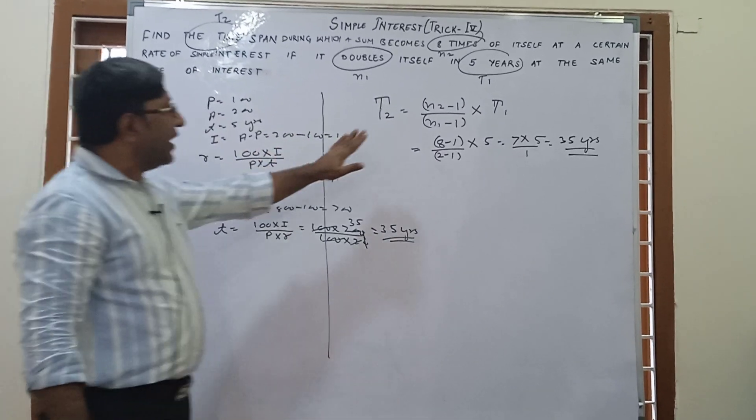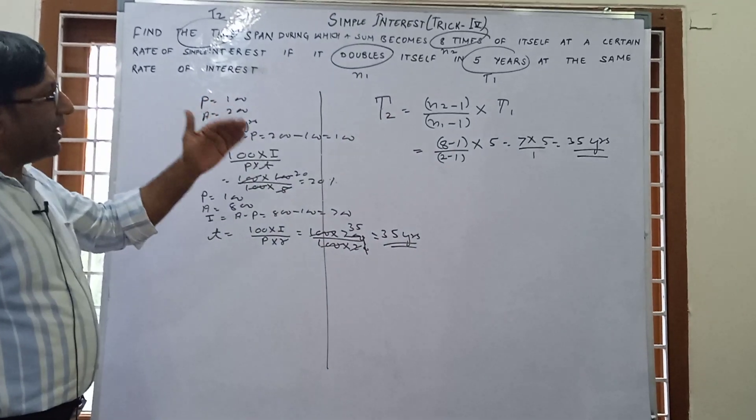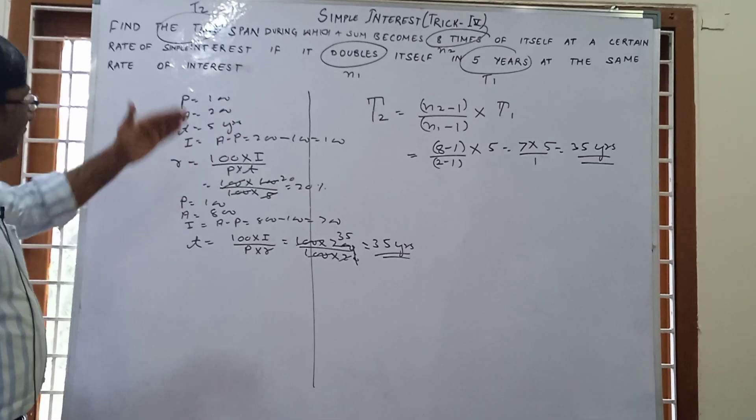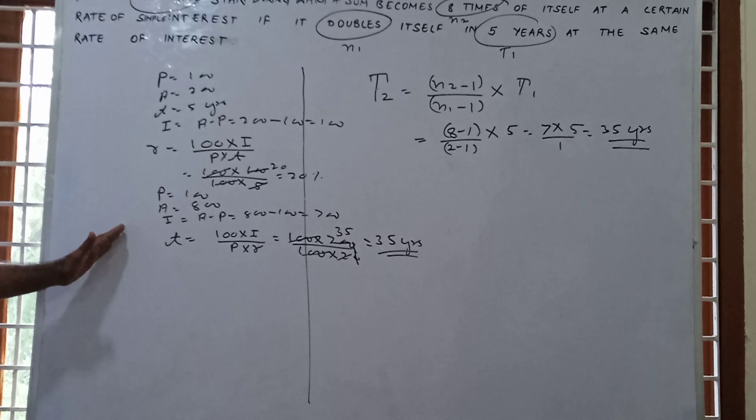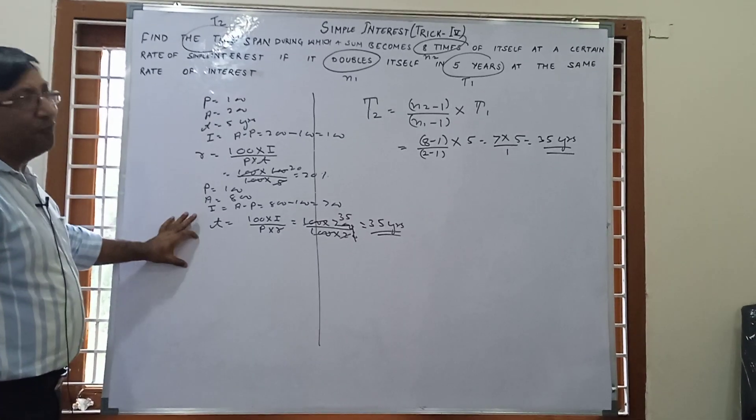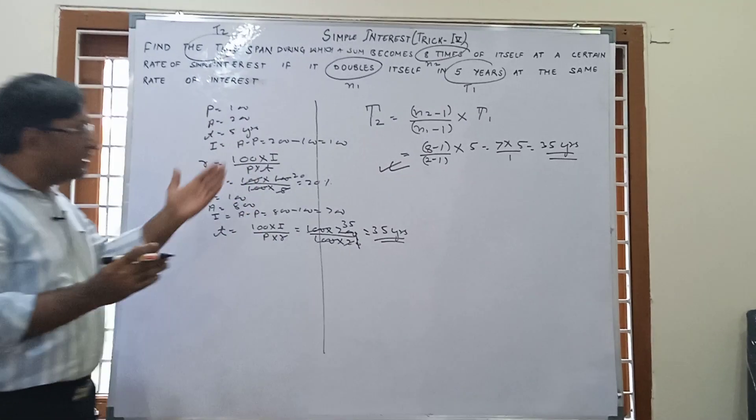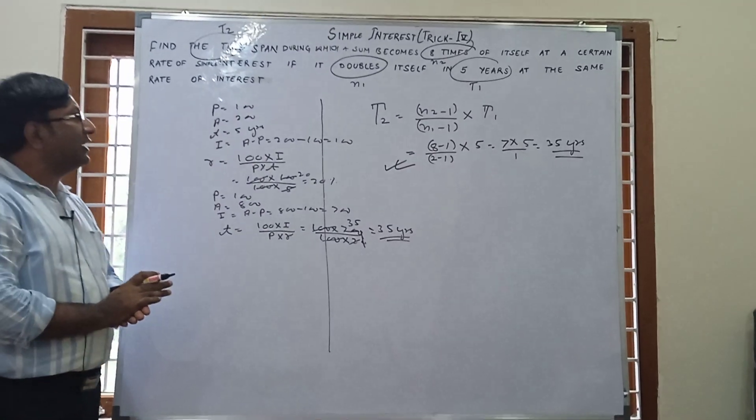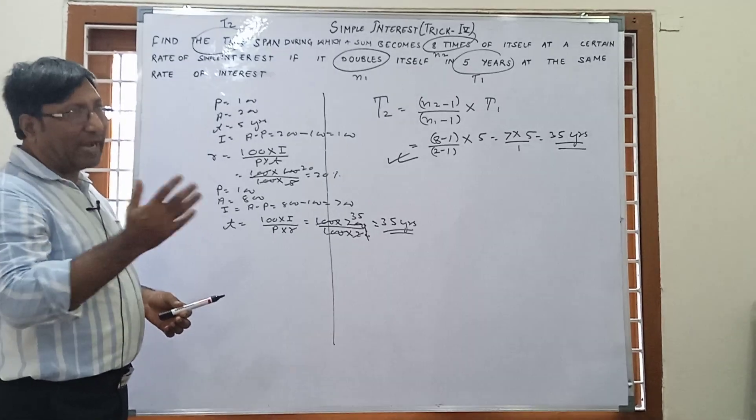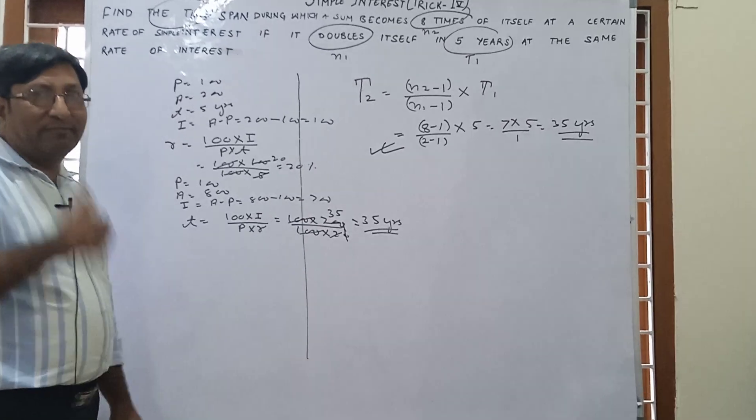In the previous method, we found in a second: T equals 8 minus 1 upon 2 minus 1 into 5, that is 35. When we do this question by the basic method, there are a lot of steps. First we find R, then we find T. This is a very important technique. With this technique, any question of this type you can solve in a second. Simply, time T2 equals N2 minus 1 divided by N1 minus 1 into time period.